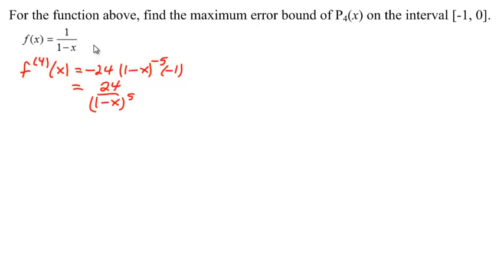Okay. Now, using the same function that we just looked at, finding the Taylor polynomial and Taylor series for the function 1 over 1 minus x, let's go ahead and find the maximum error bound of this fourth degree Taylor polynomial on the interval from negative 1 to 0.